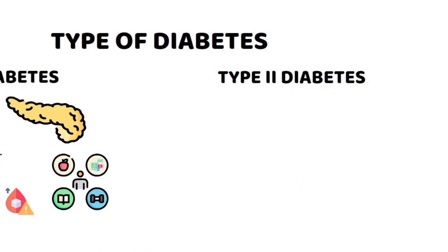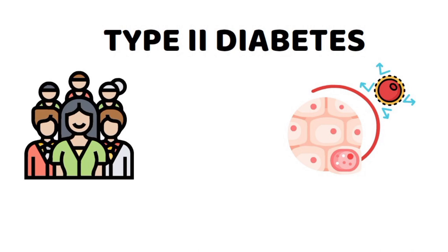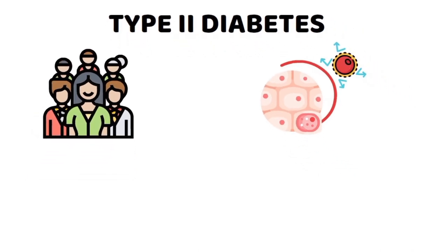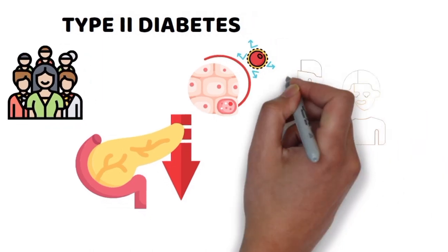Type 2 diabetes is the most common type. It results from insulin resistance, where cells don't respond properly to insulin, and inadequate insulin production. It affects both adults and children.